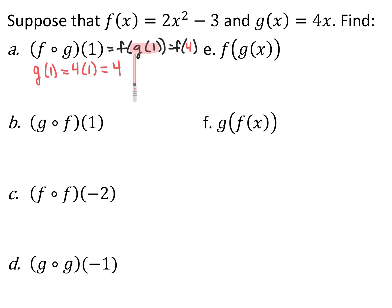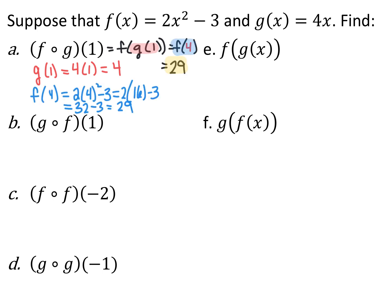Now I replace g of 1 with its output, 4, and evaluate the outside function — f of 4. I plug 4 in for x in f of x, and I end up with 29. So f composed with g of 1, or f of g of 1, is 29.